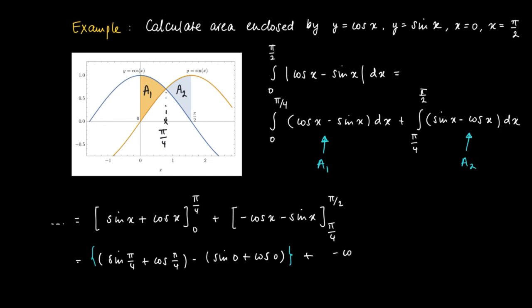And the second one is given by minus the cosine of pi over 2 minus the sine of pi over 2 minus this primitive evaluated at pi over 4, like so, so that's the second piece, and the second piece gives the area A2.